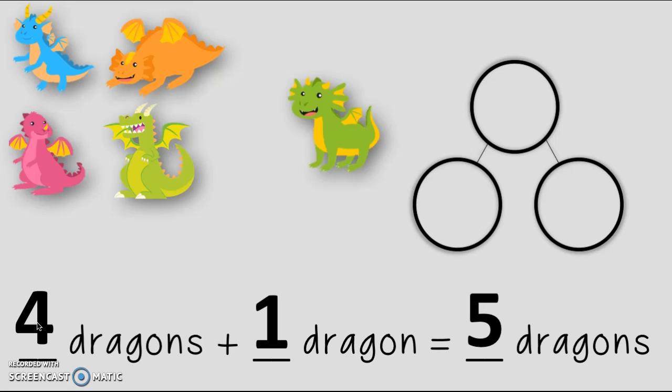So one of my parts is the first group that showed up. Four. My other part would be one because I had another part that came along later. What would my whole amount be then friend? Yeah five because in the end there were five dragons. Excellent job. Are you ready to try another one?